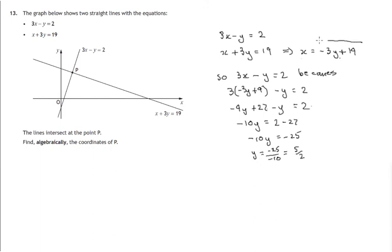And then this would be the equation that we would use to find x. So x would be negative 3 times 5 over 2 plus 19. So that's negative 15 over 2 plus 38 halves. Take away 15 halves from 38 halves. And you get 23 halves for x, which is what we got before. So again, the point P has coordinates 5 over 2, 23 over 2.